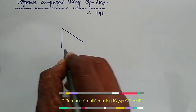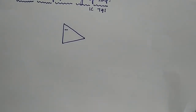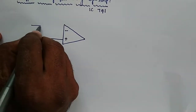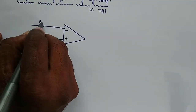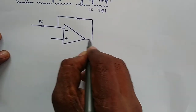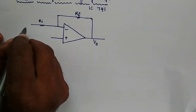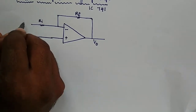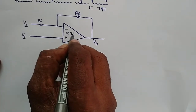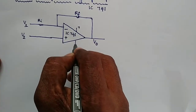The basic circuit diagram has inverting and non-inverting terminals. Basically, we have input resistance Ri and one feedback resistor Rf connected from the negative terminal. The output is V0. We have two input voltages: V1 and another V2. On the actual IC741, pin 6 is the output, pin 3 is the non-inverting input, pin 2 is the inverting input, pin 7 is the positive supply, and pin 4 is the negative supply.